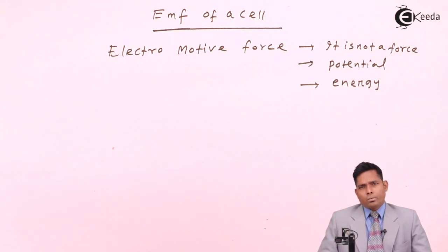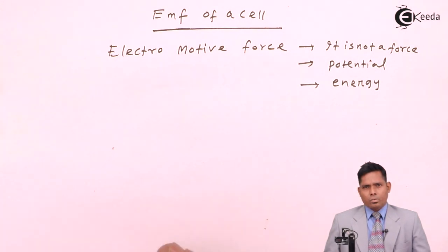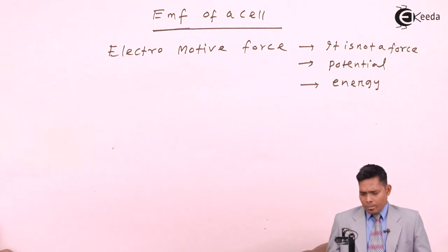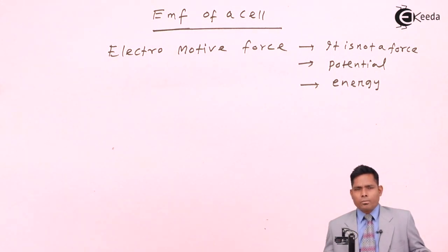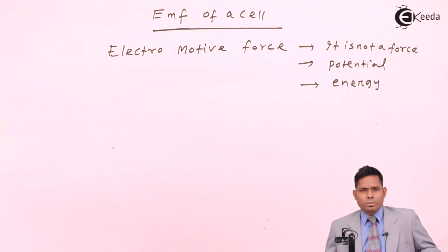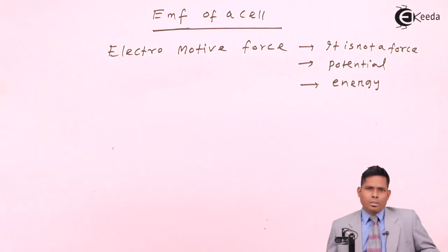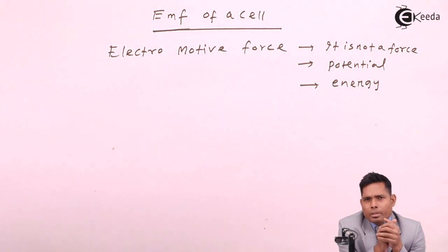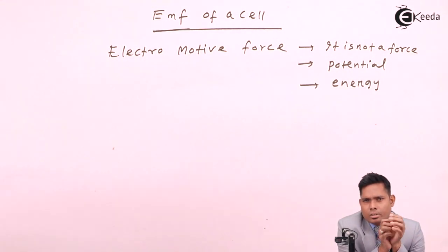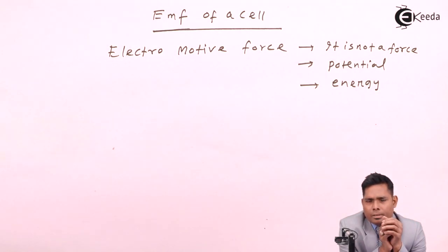A battery or cell provides a constant potential difference over a long period of time. If a resistor is connected externally, current starts flowing in the circuit, and because of resistance, there is a voltage drop across each component. Where there is resistance, there is a drop of energy — the energy supplied by the source is consumed at different parts of the circuit.